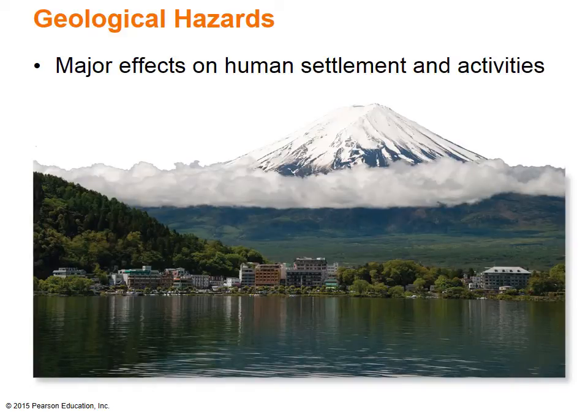There are several major geological hazards that have had an effect on human activities. They include earthquakes and volcanoes, and occur primarily along the plate boundaries. The photo shows Mount Fuji, the highest mountain in Japan, at almost 13,000 feet. This is considered an active volcano, and even though its last eruption was in 1708, if it should erupt again, it would severely impact the 36 million inhabitants of Tokyo just 60 miles away.